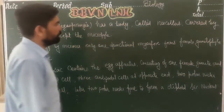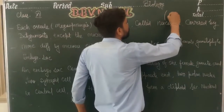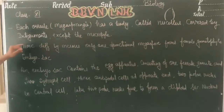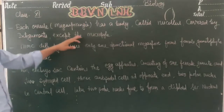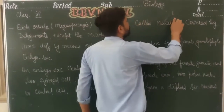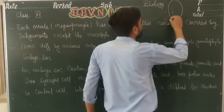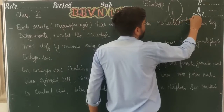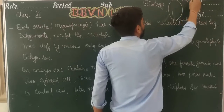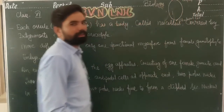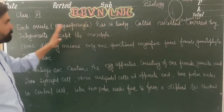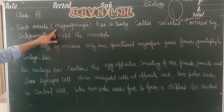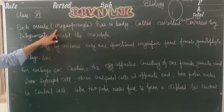The nucellus is surrounded by integuments. The ovule is covered by the integuments except at the micropylar end. The ovule has two ends: the micropylar end and the chalazal end. At the micropylar end, no integuments are present — there is no covering there.